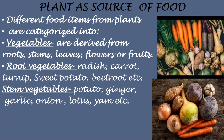Vegetables are derived from roots, stems, leaves, flowers, or fruits of a plant. Examples of root vegetables are radish, carrot, turnip, sweet potato, beetroot, etc. Examples of stem vegetables are potato, ginger, garlic, onion, lotus, and yam.